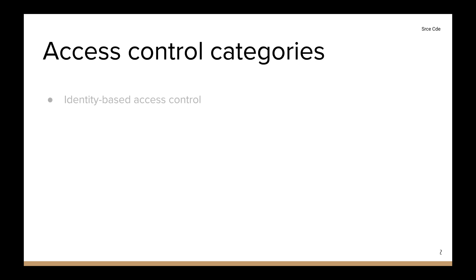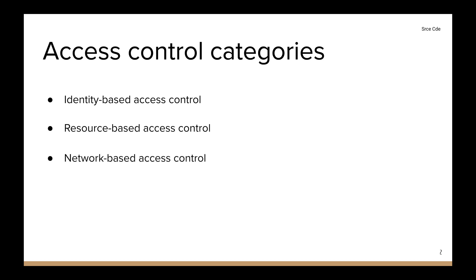There are three categories: identity-based access control, resource-based access control, and network-based access control. Identity-based access control determines whether a caller is permitted or denied access based on the identity of the user. Resource-based access control is applied directly to the API gateway resource, letting you specify who has access. Network-based access control controls the network accessibility of the APIs.